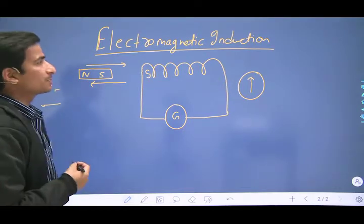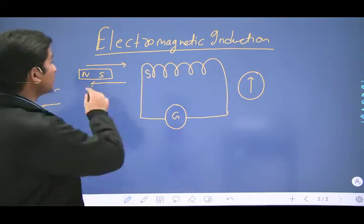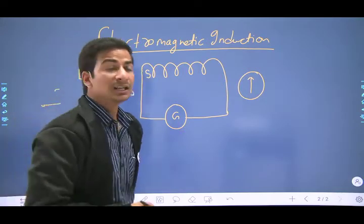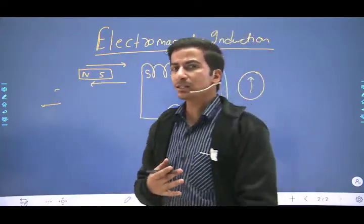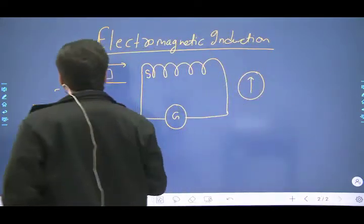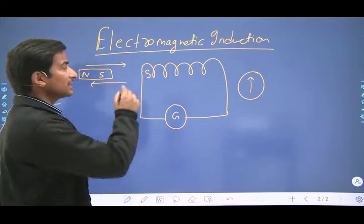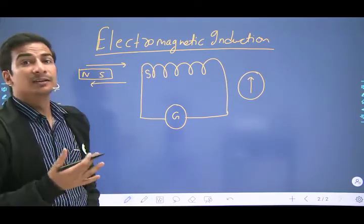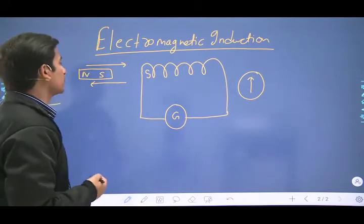This principle is known as Lenz's Law. According to Lenz's Law, induced current hamesha is tariqe se flow hoti hai ki woh usi reason ko oppose karti hai jis se woh khud produce hui hai.